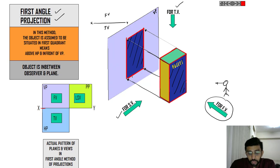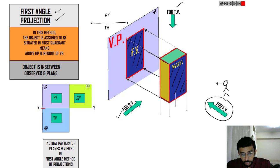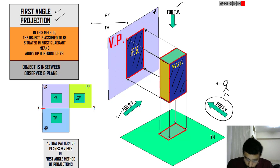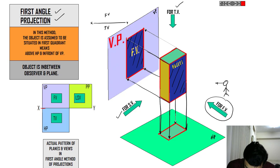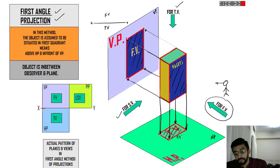So after projecting, in the front view, my front view is a rectangle of a particular size. Now keeping this object, go and look from the top side and project onto the HP. I have plotted perpendicular lines from every point and obtained the green face. So this is the top view.